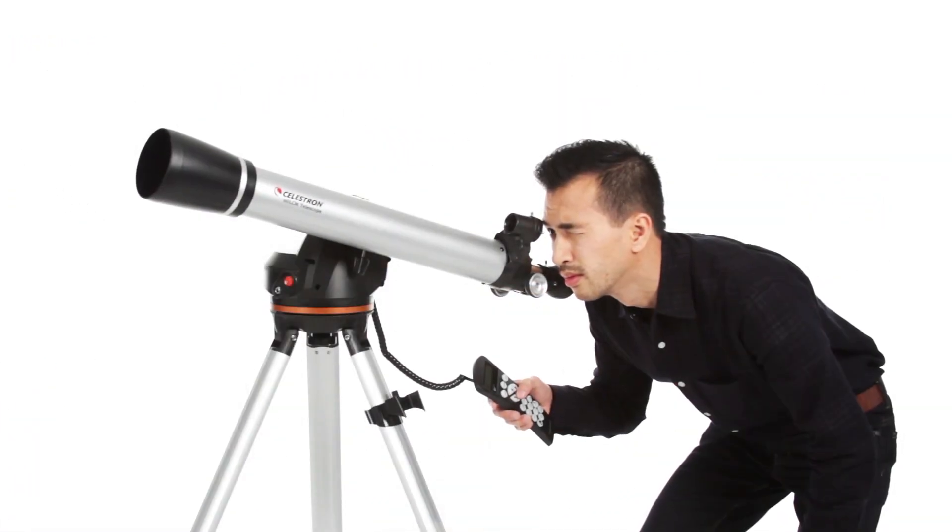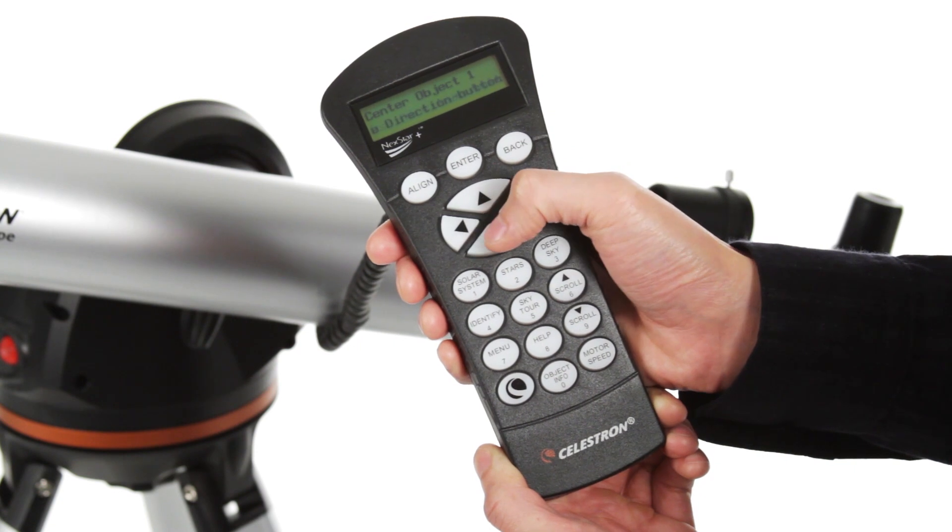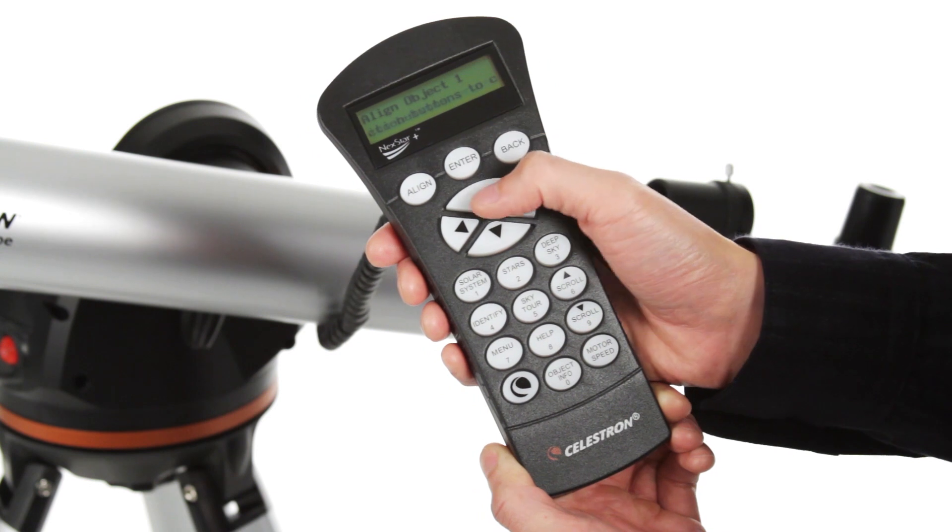Getting started is easy thanks to our proprietary SkyAlign procedure. Use the directional buttons to center any three celestial objects in the eyepiece, and your LCM is aligned and ready to locate and identify objects for you.